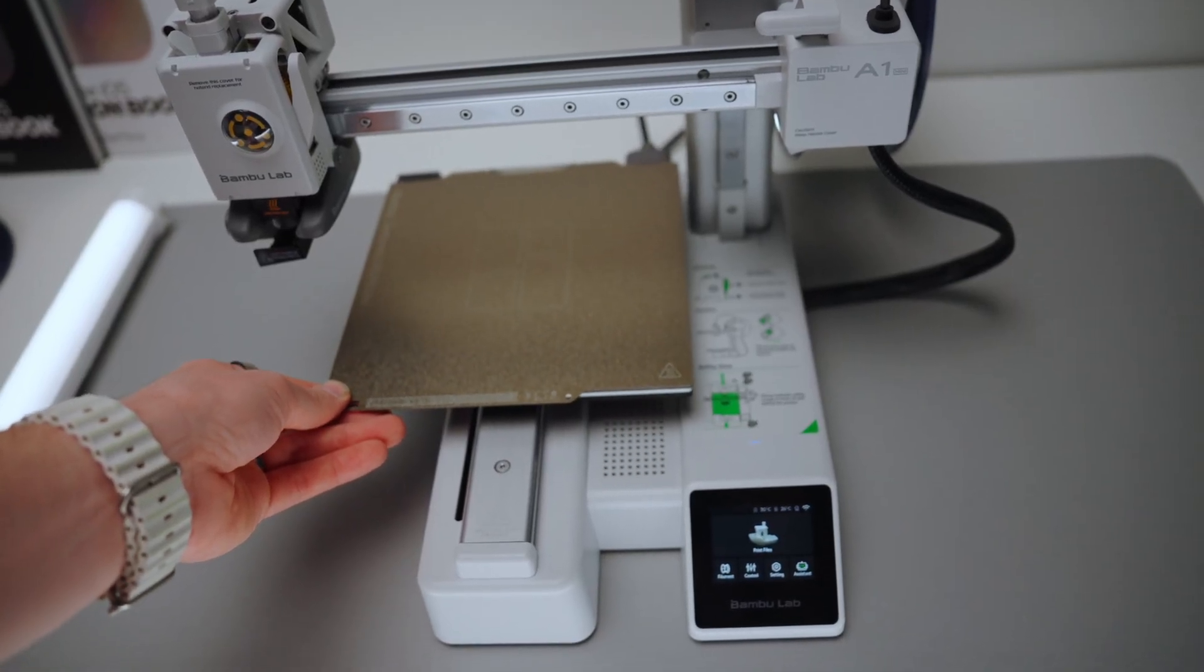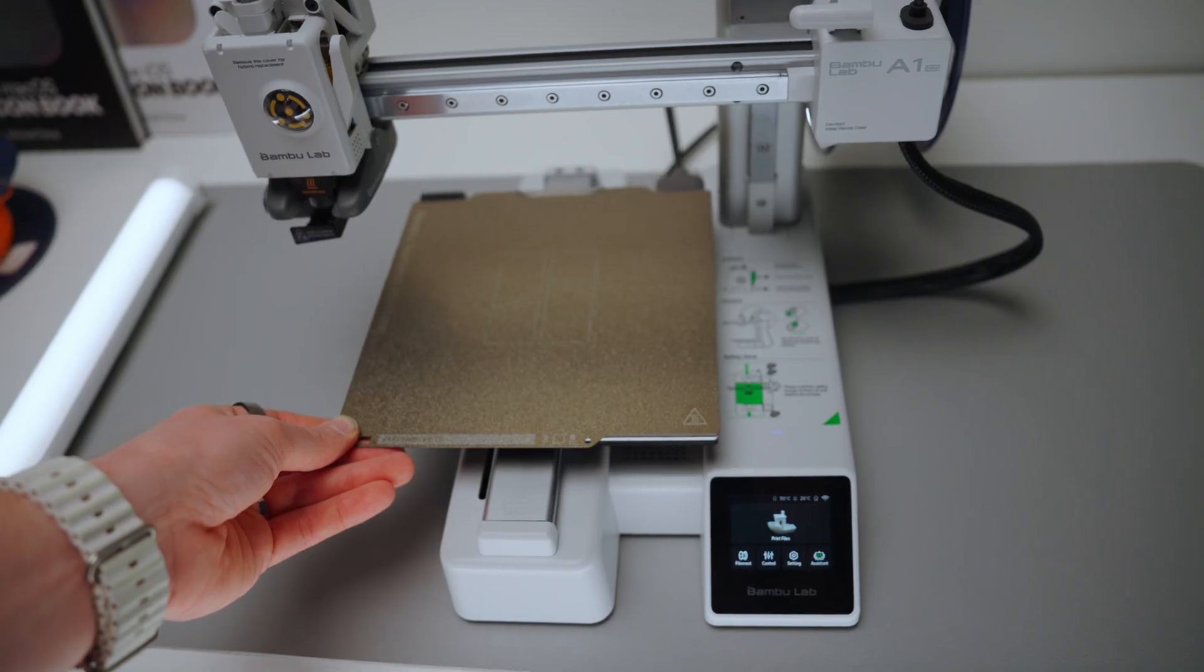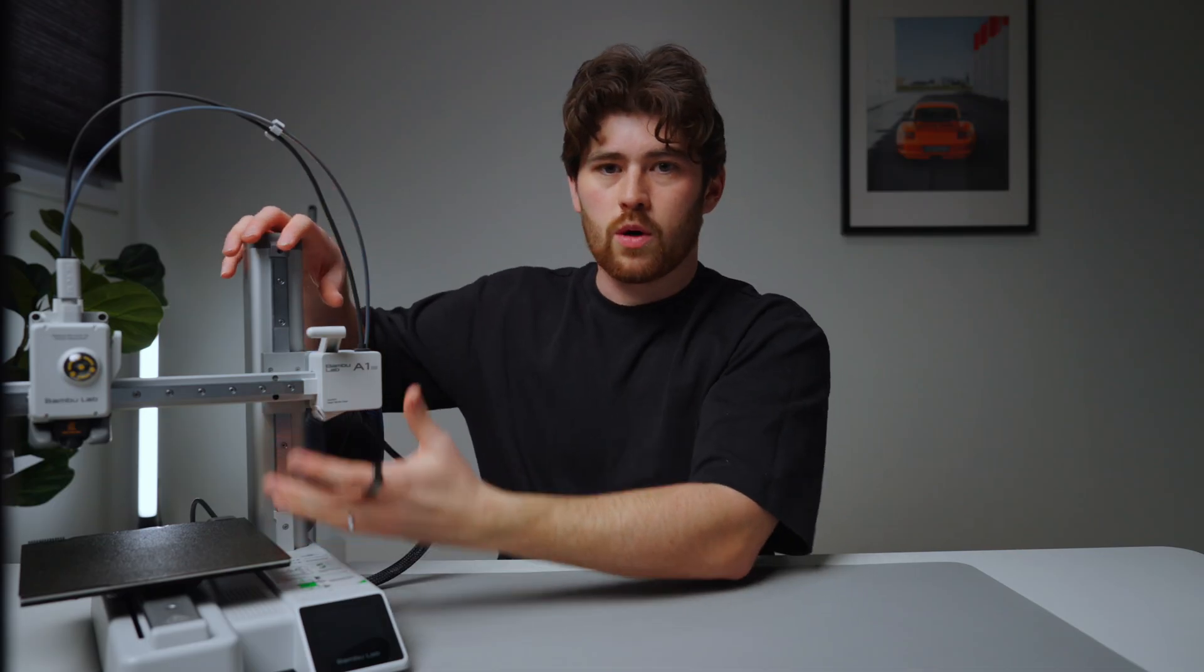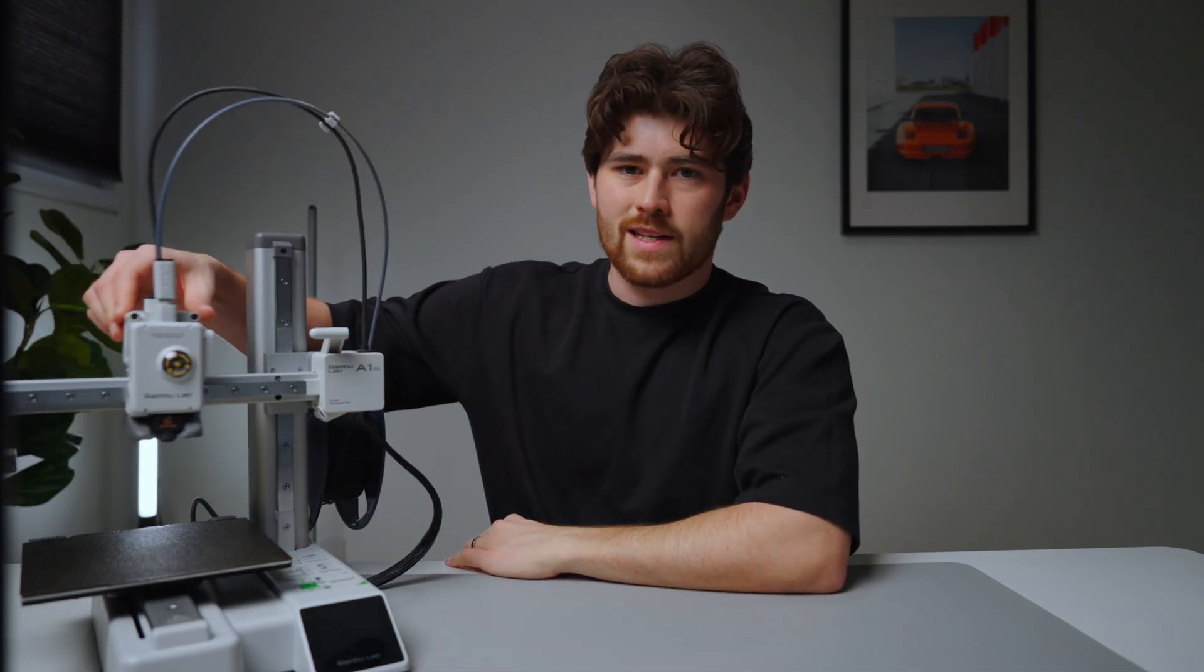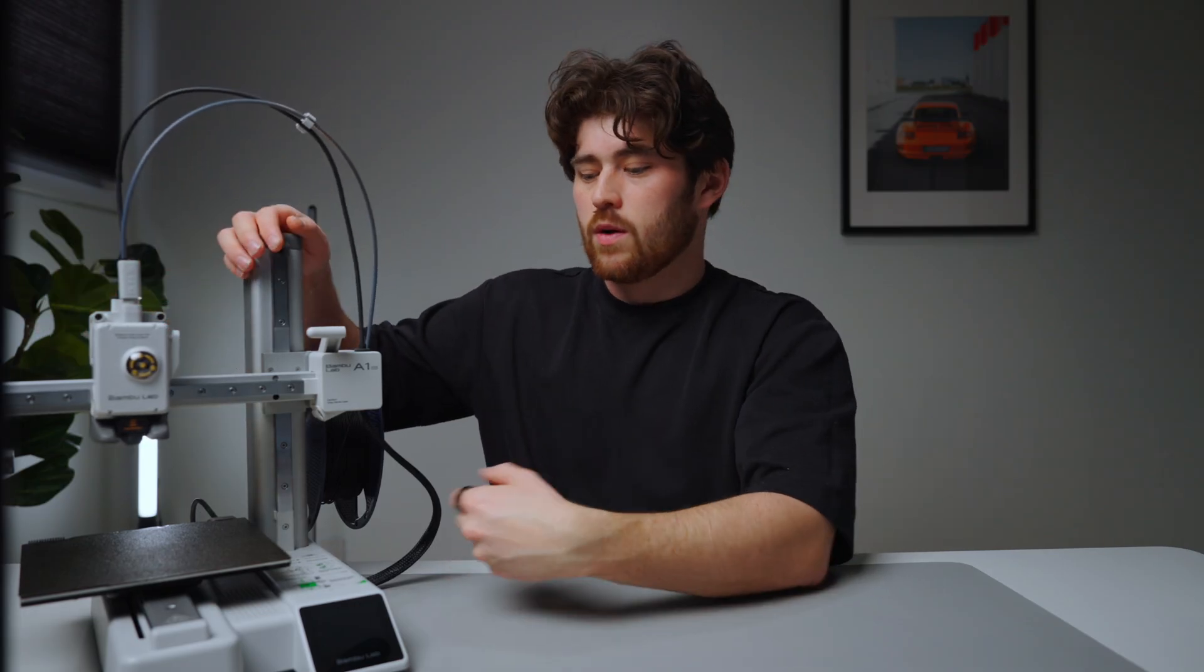You get one axis from the actual arm here going up and down, you get one from the print head going left and right, and then you get one from the actual plate going forward and backwards.